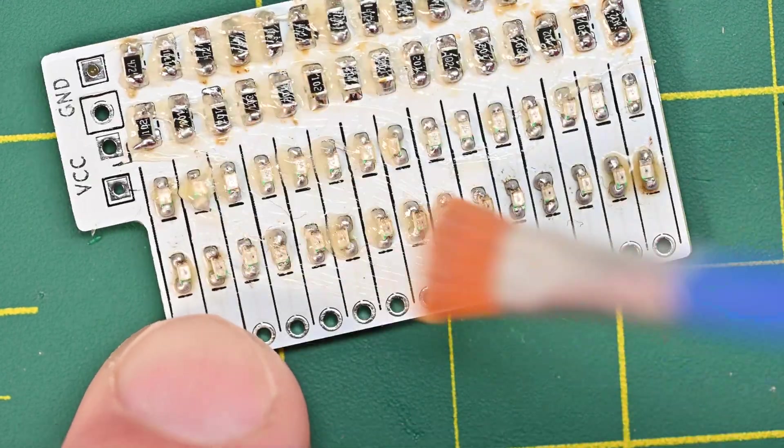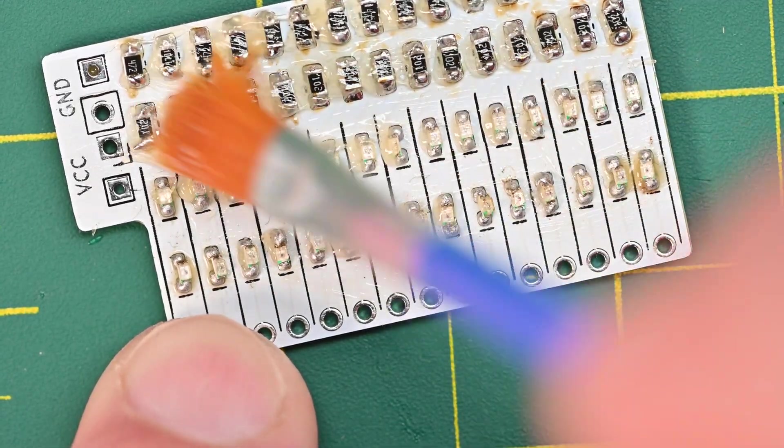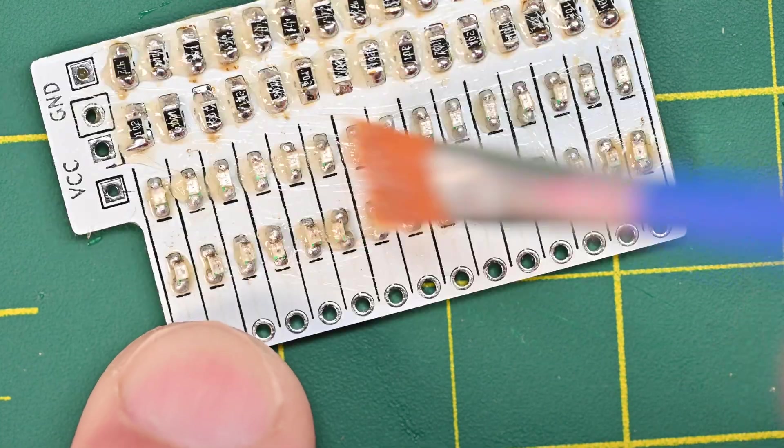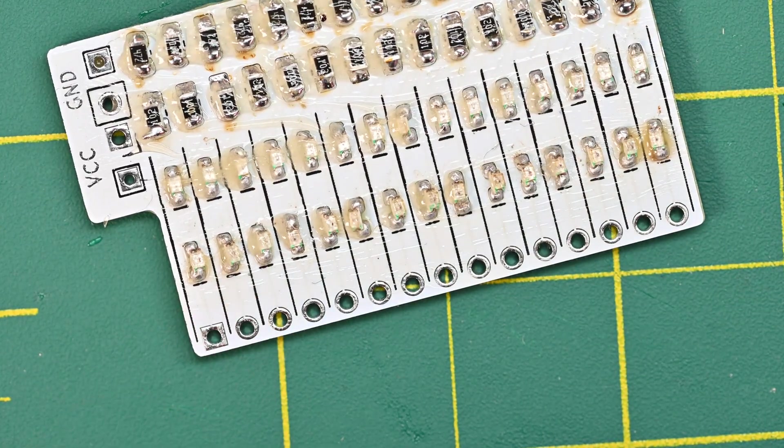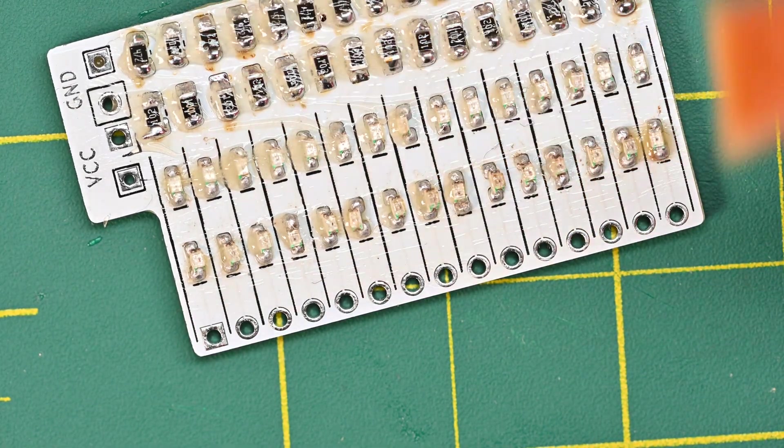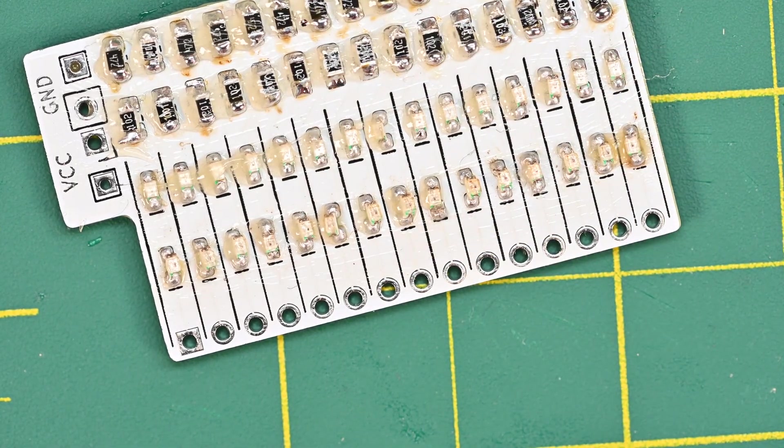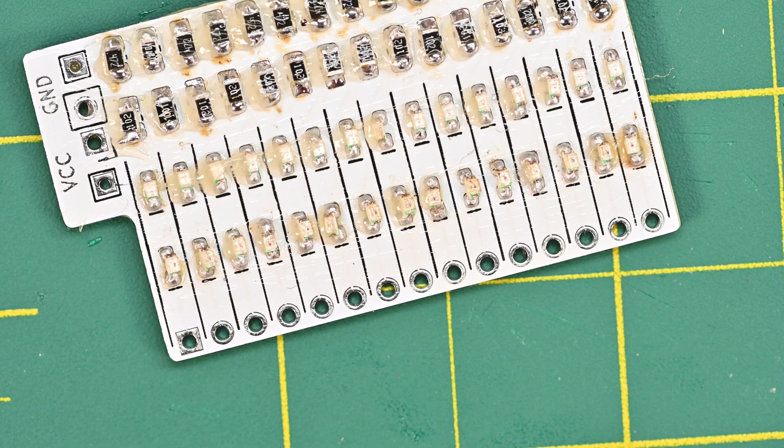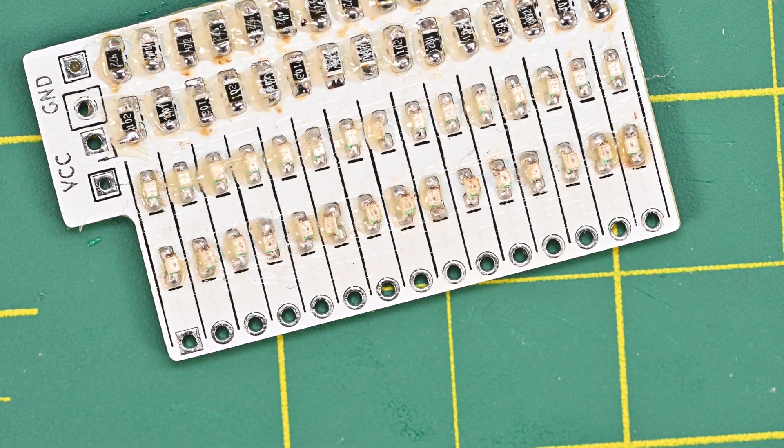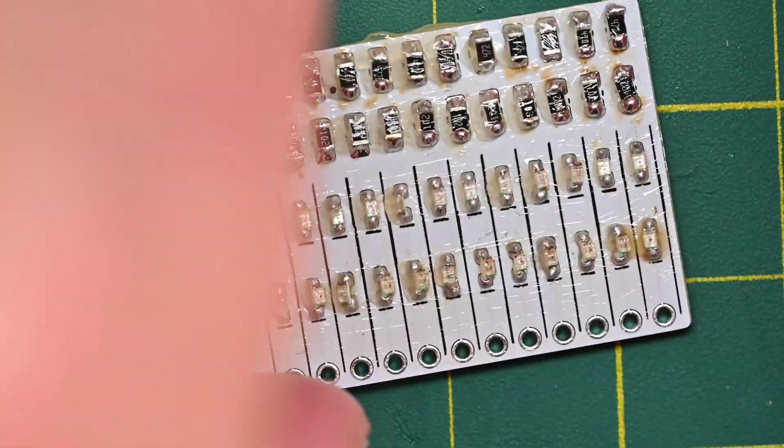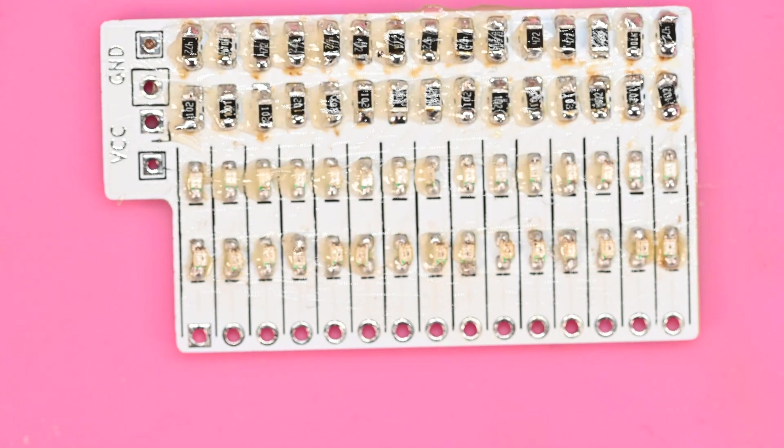Then reflow it with either a hot plate or a hot air gun and you will probably level off all your components and deal with all your cold solder joints. So if you are soldering by hand and cannot get all the components to light up, to work properly, this is another step you can take - just put a bit of flux, hit it with a heat gun or a hot plate, and just watch them melt into place. So we're going to do that here just for posterity's sake.